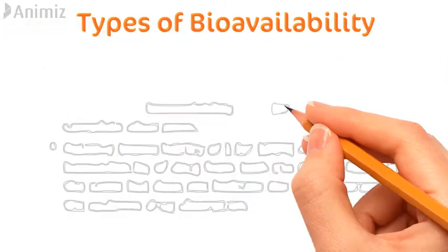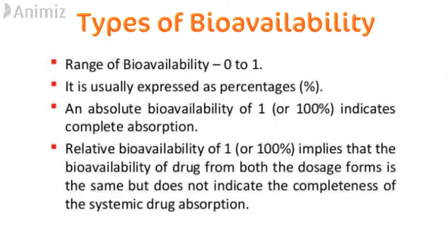Here are some important points to keep in mind. The range of bioavailability is from 0 to 1, and it is usually expressed as a percentage. An absolute bioavailability of 1 or 100% indicates complete absorption of the drug from the gut into the blood vessel. A relative bioavailability of 1 or 100% implies that the bioavailability from both dosage forms is the same, but does not indicate whether the drug has been completely absorbed.